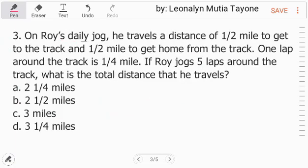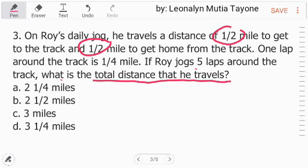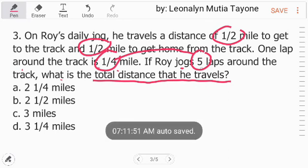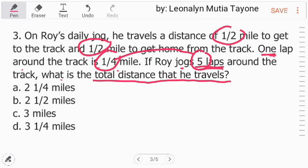Number 3, on Roy's daily jog, he travels a distance of 1 half mile to get to the track and 1 half mile to get home from the track. One lap around the track is 1 fourth mile. If Roy jogs 5 laps around the track, what is the total distance that he travels? Around the track, what is the total distance that he travels?